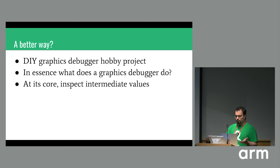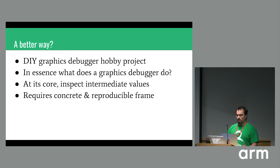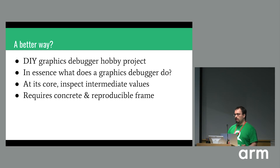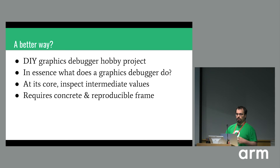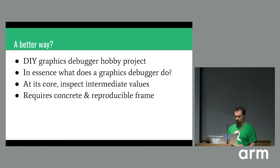So I wondered: what would it take to write a graphics debugger? What at its core does a graphics debugger do? The main thing it allows you to do is inspect what is happening midway through a frame — take apart the frame and see the intermediate results being generated and consumed to get to the final result. To do that, you need a concrete representation of the frame. You need to see what the inputs are at any given point, what the pipeline state is, and be able to go back and forth through the frame, because you're always looking back and forth at dependencies.